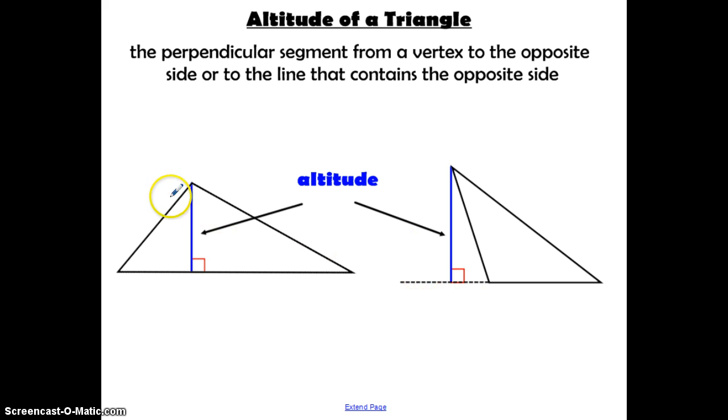An altitude of a triangle is the perpendicular segment that goes from a vertex to its opposite side. So this segment right here goes through this vertex and is perpendicular to the opposite side of the triangle. When you take a look at this triangle, if you were to take this vertex and try to draw a perpendicular segment to this side, because of this obtuse angle, we're not allowed to do that. So we actually need to extend this side so that we can drop an altitude outside of the triangle.